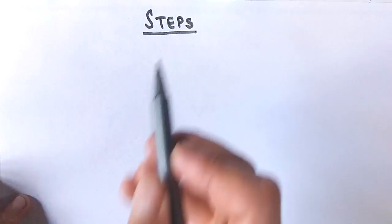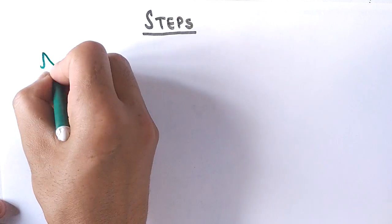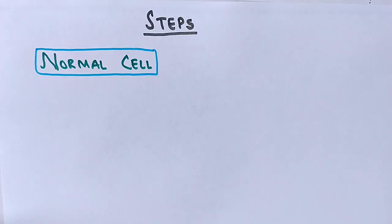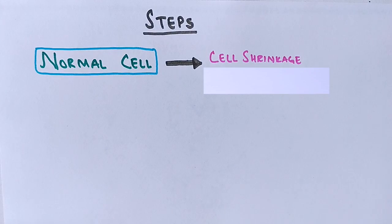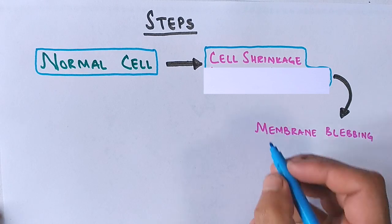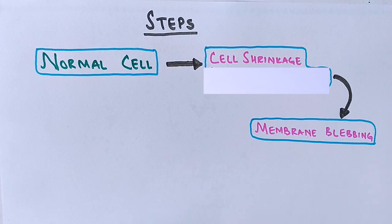Now let's discuss the steps by which a cell is eliminated by apoptosis. We start with a normal cell. When it receives apoptotic signals — either intracellular or extracellular — the first event is cell shrinkage, where the cell shrinks down. Then the cell undergoing apoptosis shows membrane blebbing, where the plasma membrane protrudes outward due to intracellular pressure generated in the cytoplasm when the actin cortex undergoes actomyosin contractions.